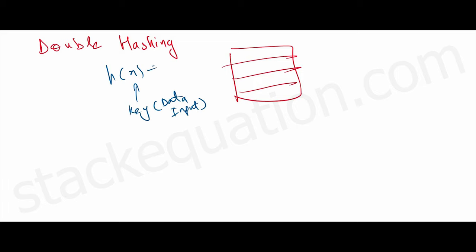In the previous videos we studied collision resolution. It's a simple concept. In a hash table, suppose h(x) is a hash function and we want to find an index for a data input.